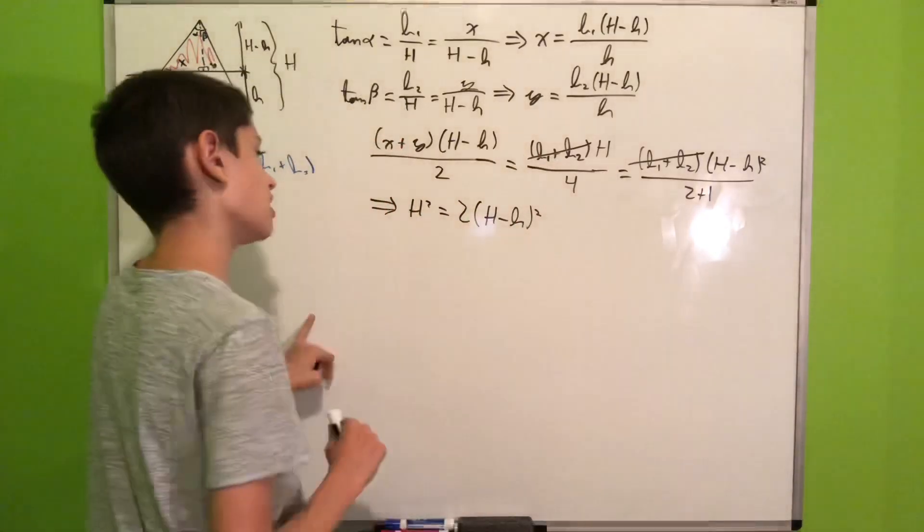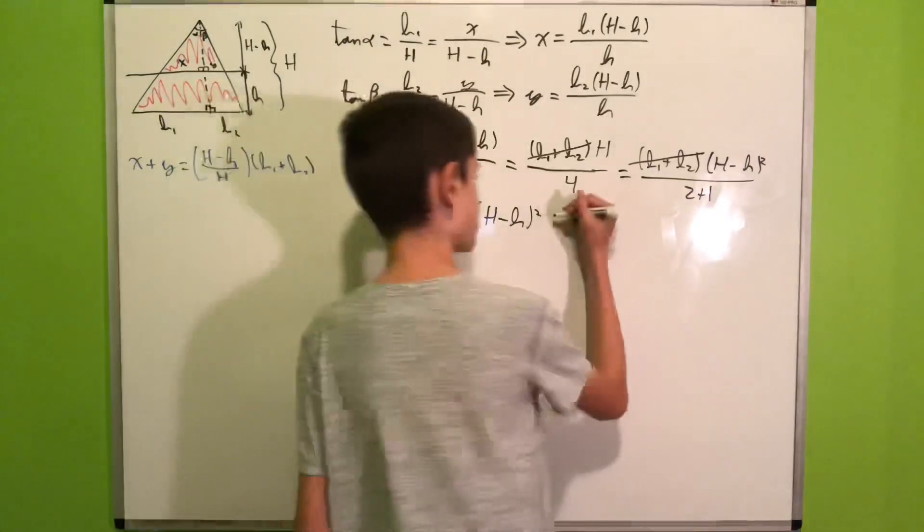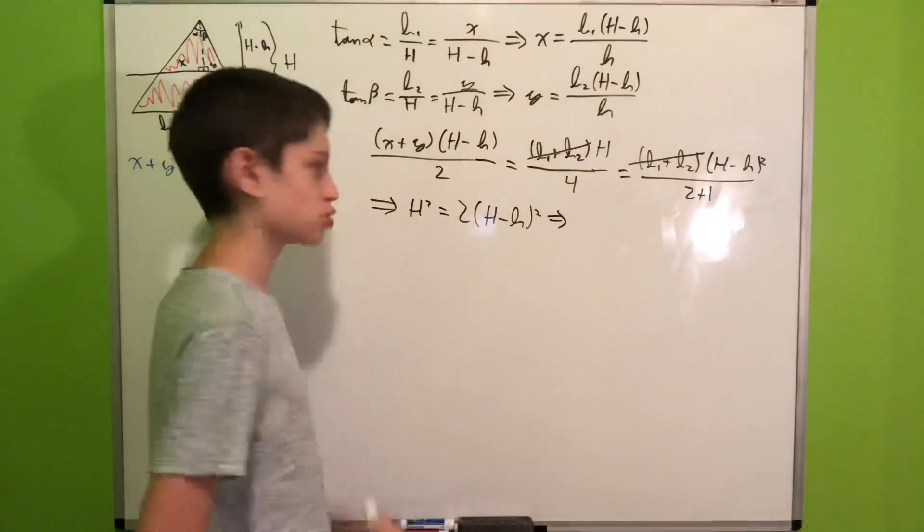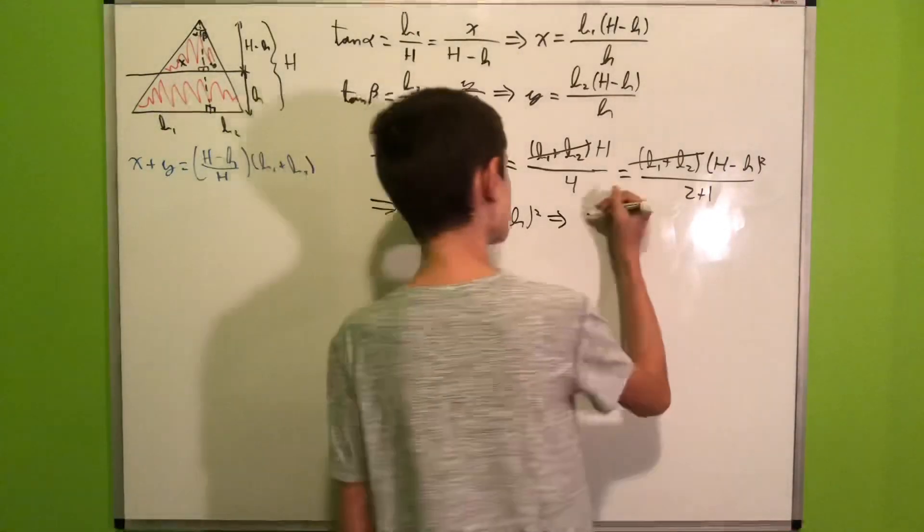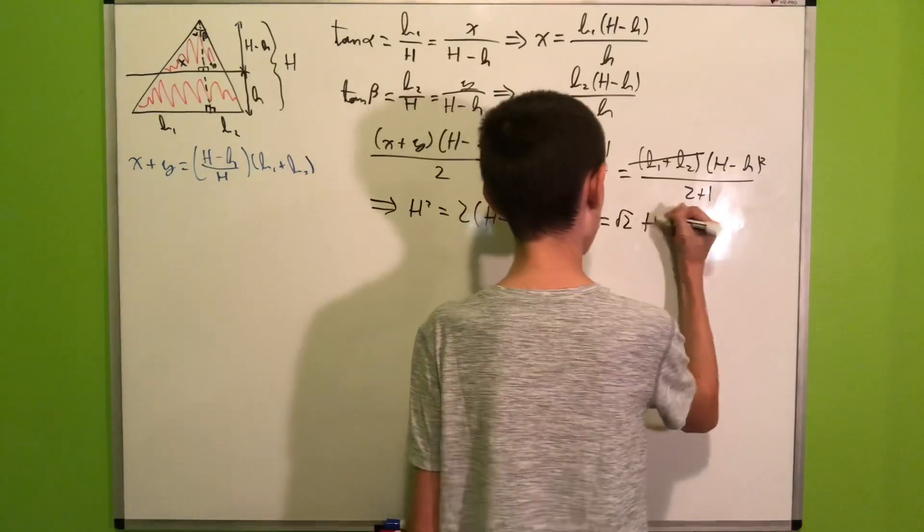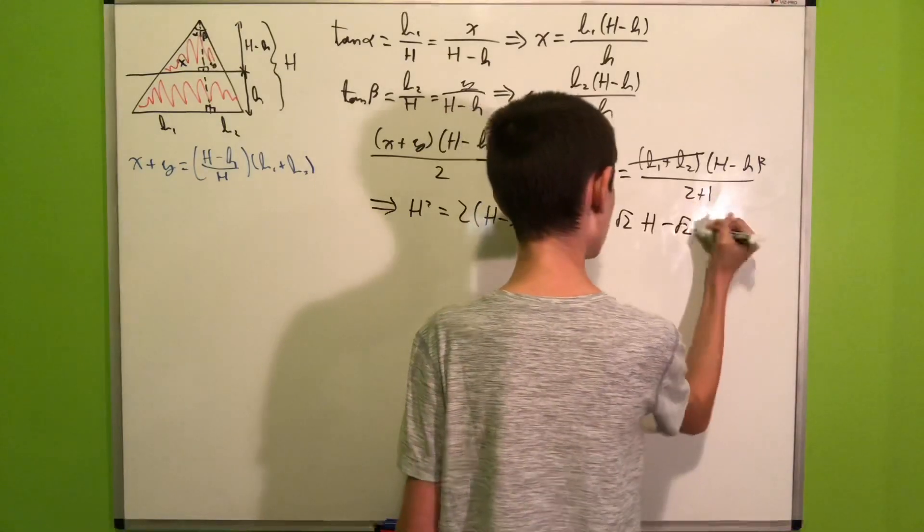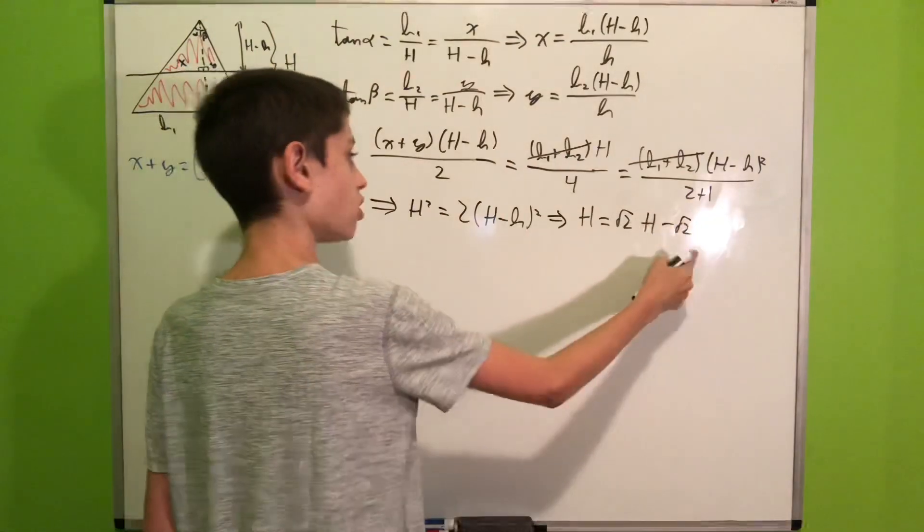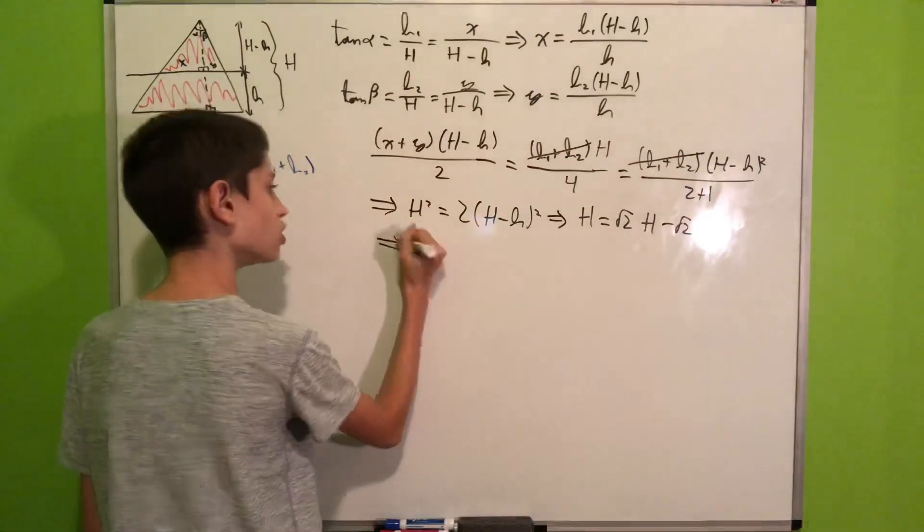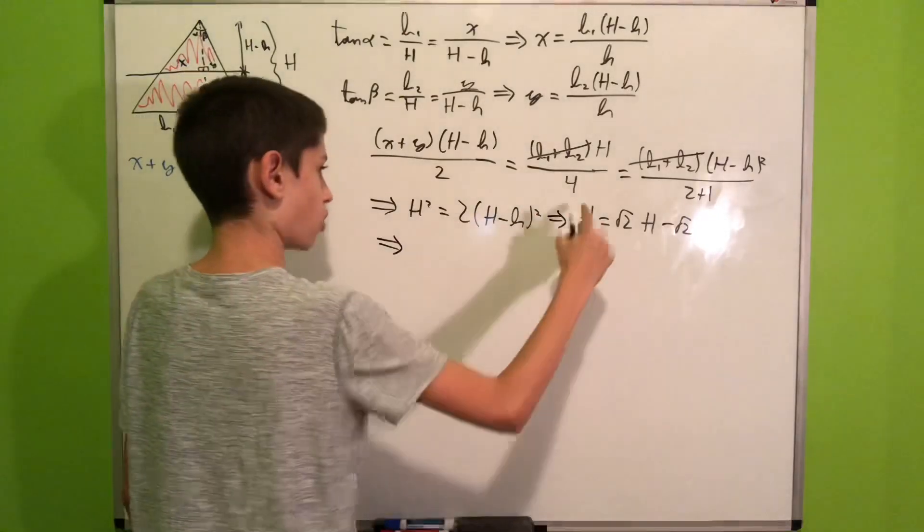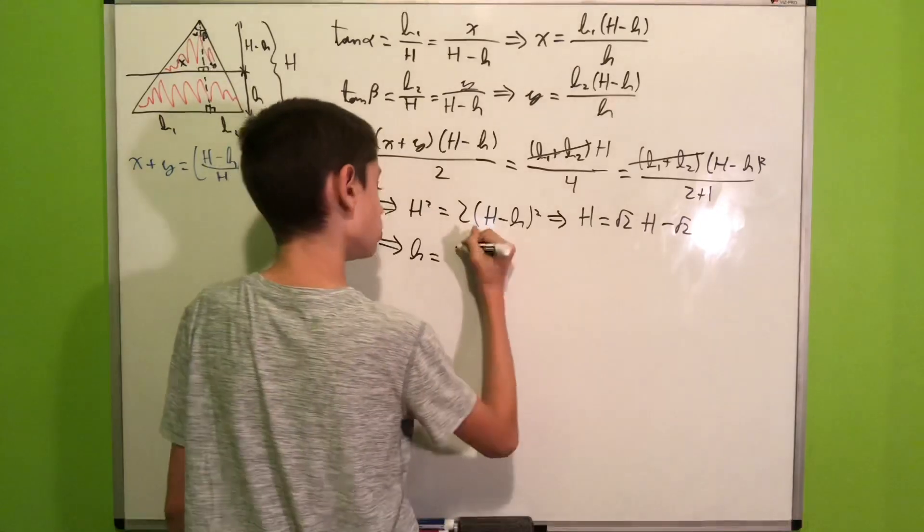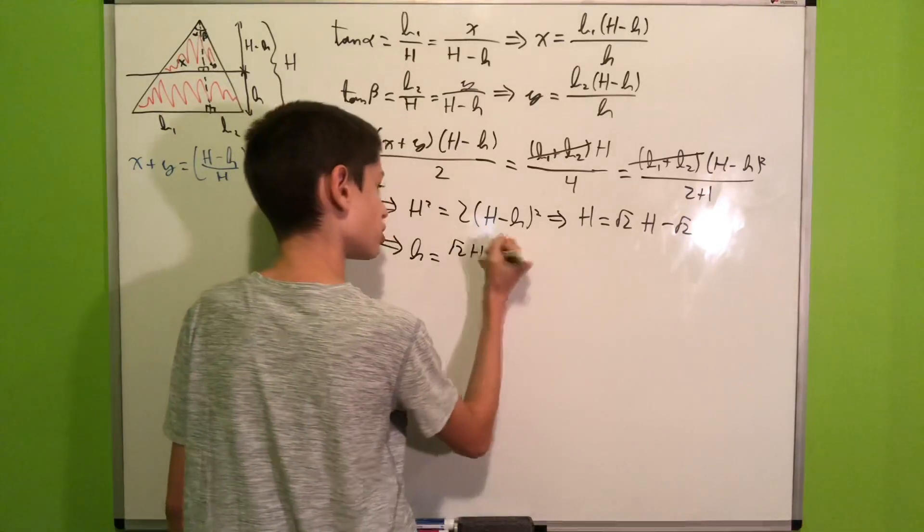We can take the positive square root on both sides because we're in Euclidean geometry and in Euclidean geometry lengths are positive. So we get H equals square root of 2 times (H minus h). Now we can easily solve for our little h. We get h equals square root of 2 times H minus H, all over the square root of 2.